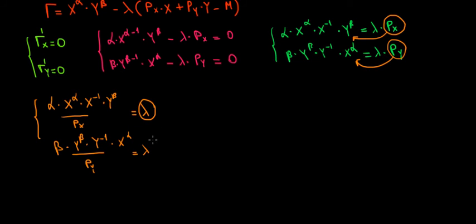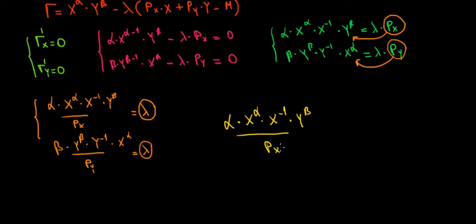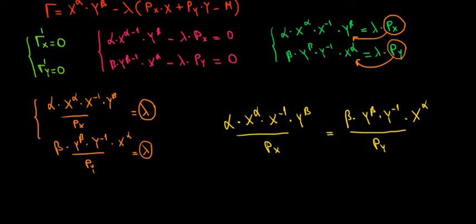Now we have lambda on both sides, so the two expressions are equal. Setting them equal: α·x^α·x^(−1)·y^β / px = β·y^β·y^(−1)·x^α / py. We can now cancel out common terms: x^α appears on both sides and cancels out, and y^β appears on both sides and cancels out as well.